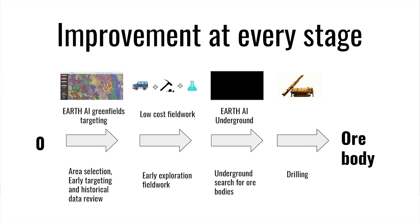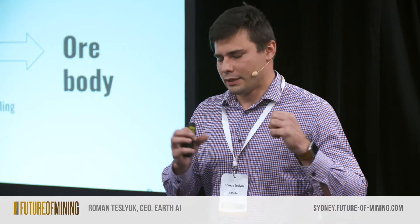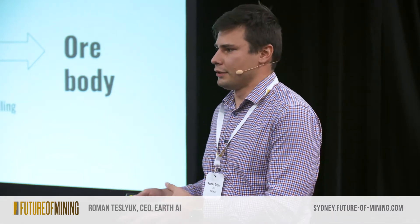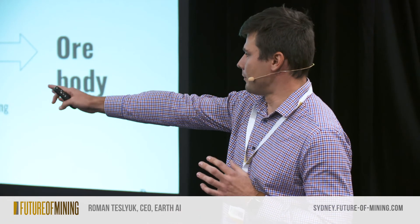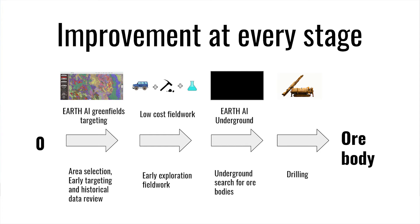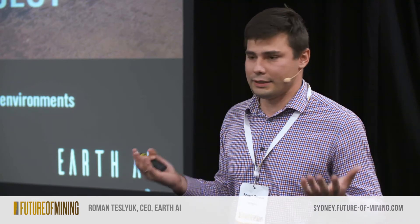The next two stages are what we call Earth AI Underground — our new resource development initiative. Once we find a soil or rock chip anomaly on the surface, we want to find the source of that anomaly underground using a similar principle. Then comes drilling. Using our full workflow, we can realistically get from zero to drilling in five weeks on a new area. We run constant operations in the Northern Territory, which is historically underexplored, predicting from data-rich areas across the Australian database.